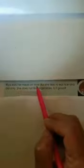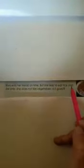Let us learn about the food we eat. Rhea eats her meals on time, but she likes to eat rice and dal only. She does not like vegetables. Is it good? This is the picture of rice and dal.